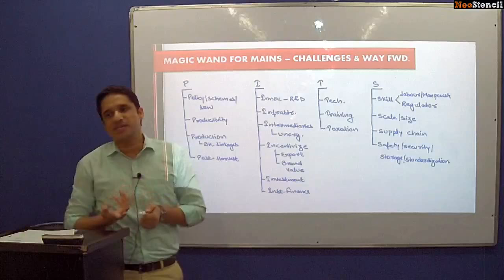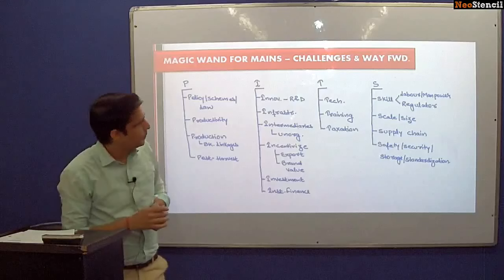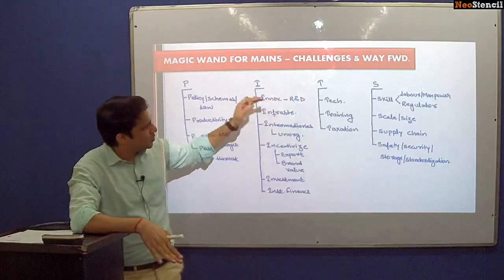One of the subsections usually is the challenges. So in GS Paper 1, 2, 3, some part of ethics, some part of optional — in the majority you can expect around 15 questions related to challenges in Mains, and in each and every question you have to mention the way forward. This slide is particularly relevant from the challenges perspective as well as from the way forward perspective.